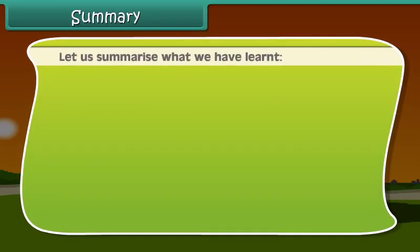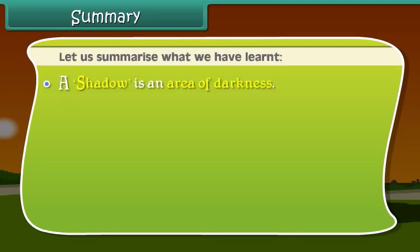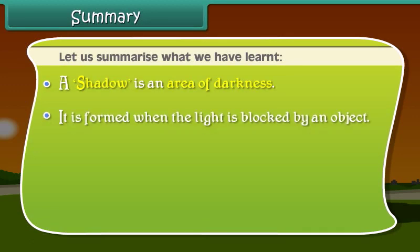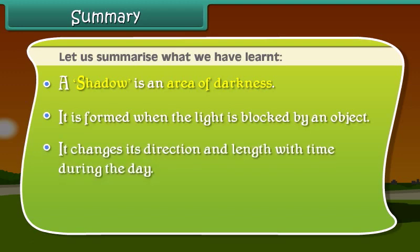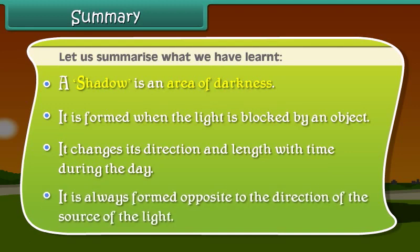Now, friends, let's summarize what we have learned. A shadow is an area of darkness. It is formed when the light is blocked by an object. It changes its direction and length with time during the day. It is always formed opposite to the direction of the source of light.